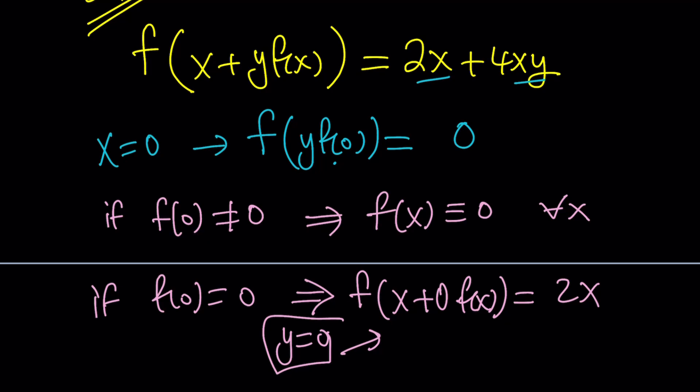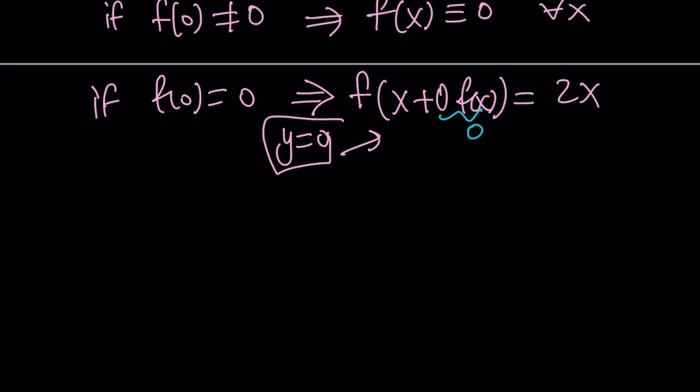But, notice that this is just 0, giving us f(x) equals 2x. And, again, in this case, you can verify that f(0) is equal to 0. I hope you like the second method.